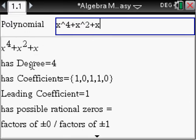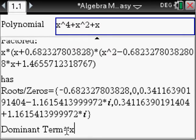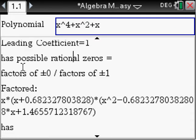So up here we have the equation, it shows the degree, coefficients, the leading coefficient, the possible rational zeros, and root zeros, dominant term, what it is factored, everything.